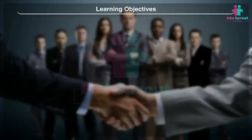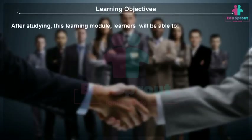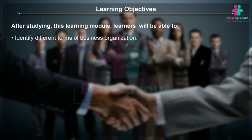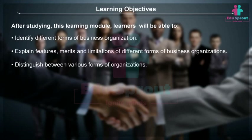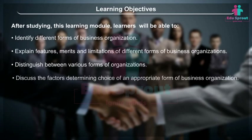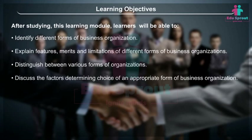Learning Objectives: After studying this module, students will be able to identify different forms of business organization, explain features, merits and limitations of different forms of business organizations, distinguish between various forms of organizations, and discuss the factors determining choice of an appropriate form of business organization.